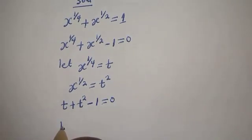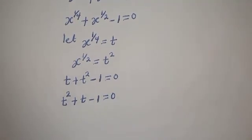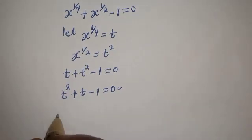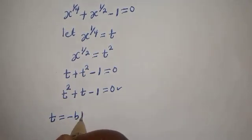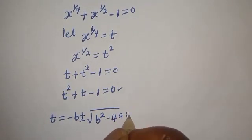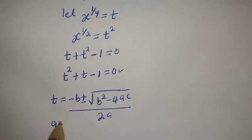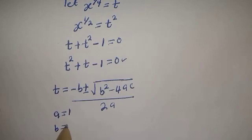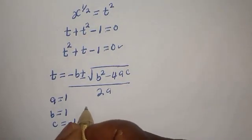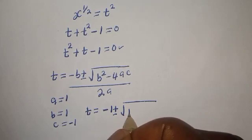Now, let's rearrange: t squared plus t minus 1 is equal to 0. This is a quadratic equation which can be solved using the quadratic formula: t is equal to minus b plus or minus square root of b squared minus 4ac, over 2a. From this equation, a is equal to 1, b is equal to 1, c is equal to minus 1.